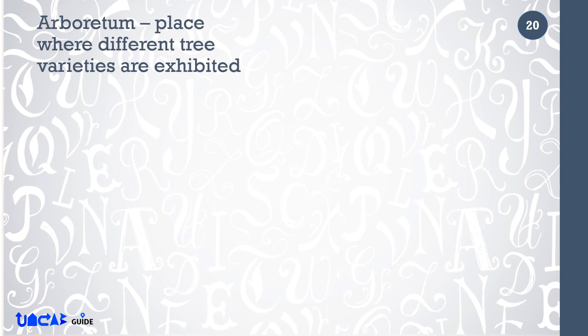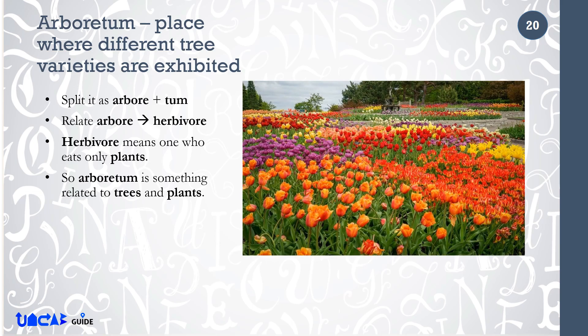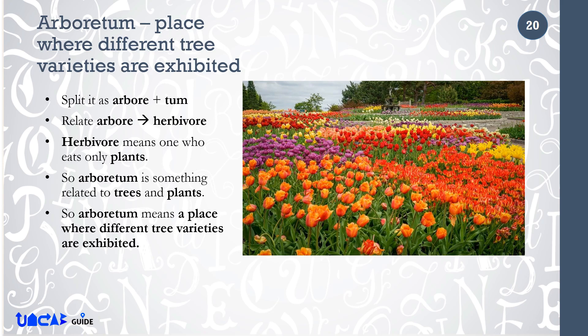Arboretum means a place where different tree varieties are exhibited. Split it as Arbor plus Term. Relate Arbor to Herbivore. Herbivore means one who eats only plants. So, arboretum is something related to trees and plants. So, arboretum means a place where different tree varieties are exhibited.